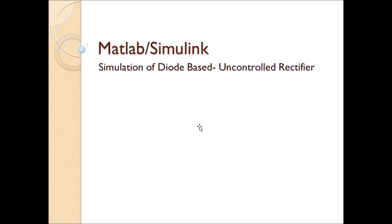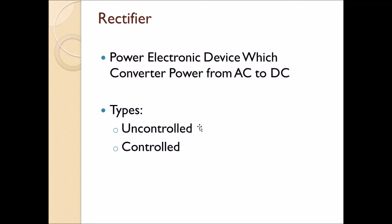Welcome. In this video I will be explaining about the simulation of a diode-based rectifier, that is an uncontrolled rectifier. A rectifier is a power electronic device which converts AC power to DC power. There are two types: uncontrolled rectifier and controlled rectifier. Uncontrolled rectifier is made of diodes and controlled rectifier is made of thyristors and other controlling devices.